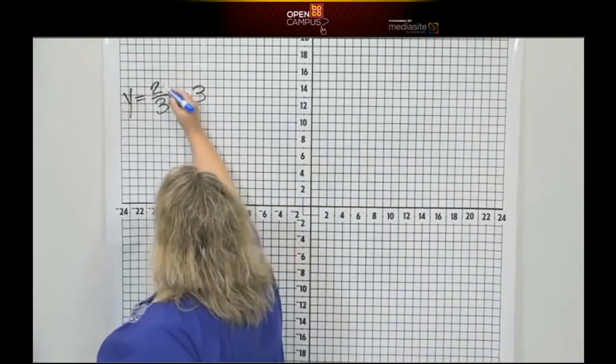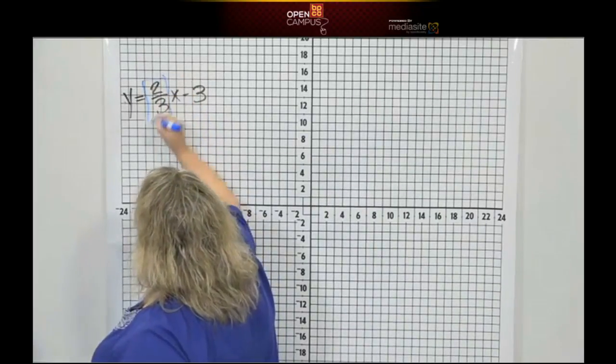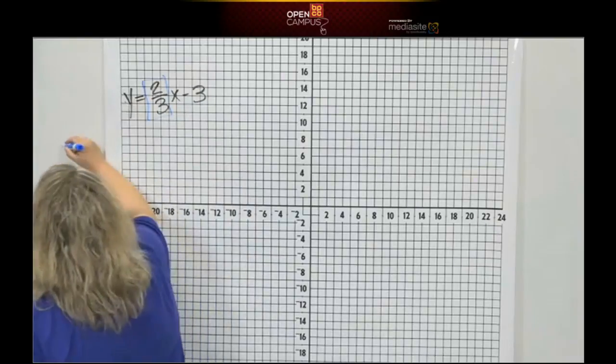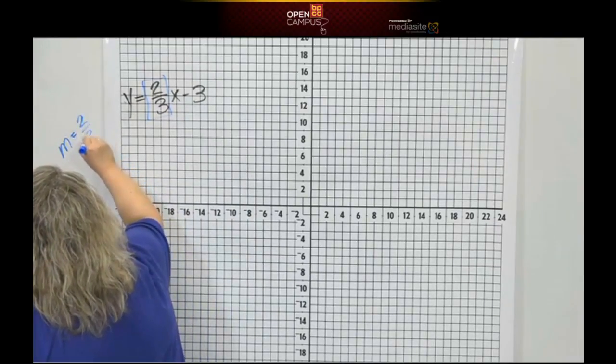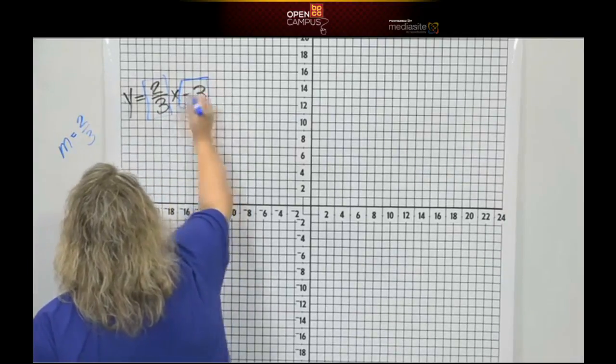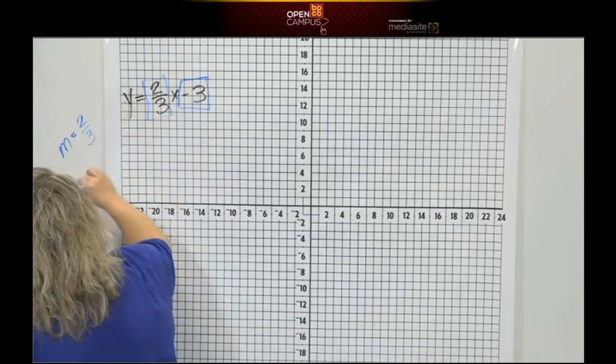So if I identify my slope, my slope is here, m. So let's write that down. m equals positive two-thirds. What is b? b is negative three.